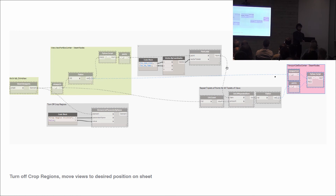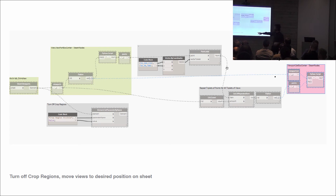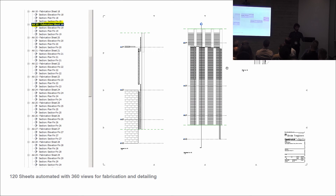Another bit of geometry translation: we use packages from Archilab, sheet viewports, and two nodes from the Steam nodes to get the viewport location of any viewport. We can then use vector multiplication to say this view is currently here, multiply by a vector, and put it there — iterating through all the options. What it leaves us with, once we've gone through this massive process, might seem over the top, but we have a very robust way to create 120 documentation sheets, each with a plan, section, and elevation oriented to a unique piece of geometry as it moves along the curve.